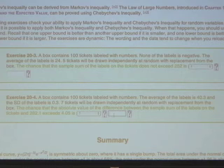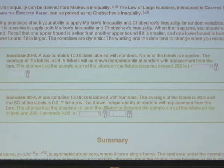So what have we got? The average is 40.3. The SD is 0.3. We're looking at the sample sum of a sample of size 7 drawn with replacement from the box.